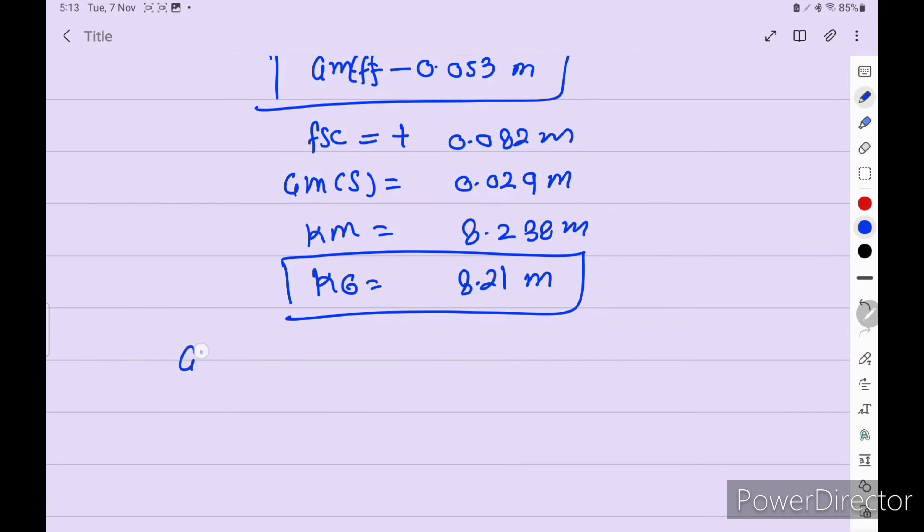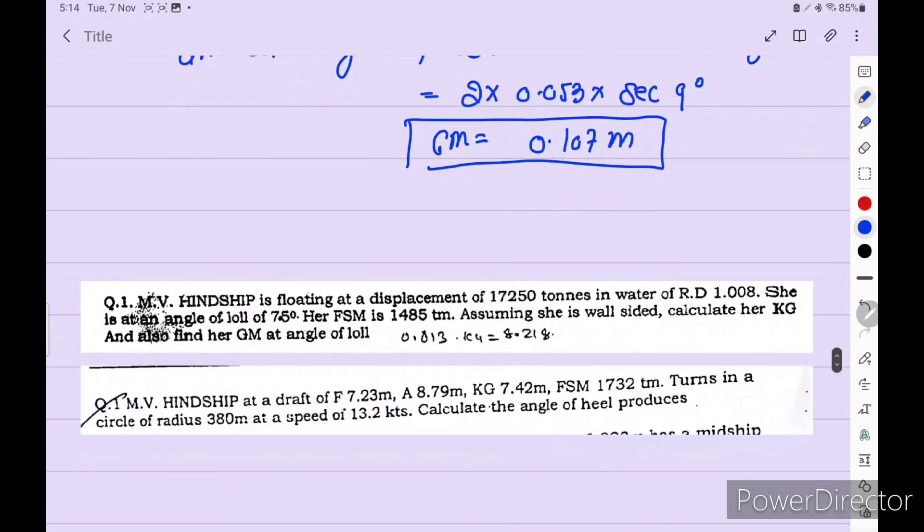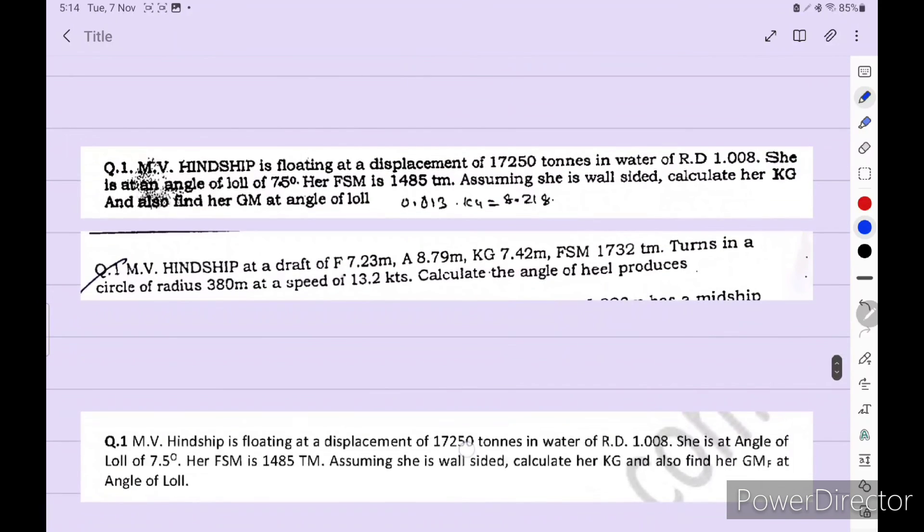Now find out the GM at angle of loll. GM at angle of loll is equal to formula 2 into initial GM into sec angle of loll. So 2 initial GM is equal to 0.053 into sec angle of loll 9 degree. So we get GM at angle of loll is 0.107 meters. So this is our answer.